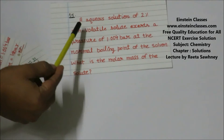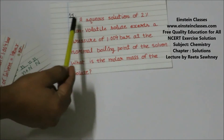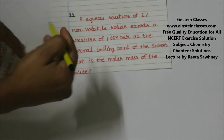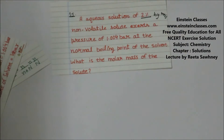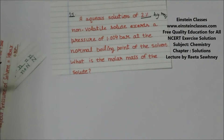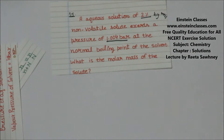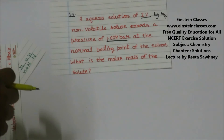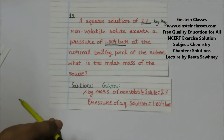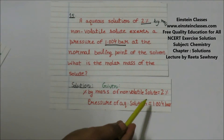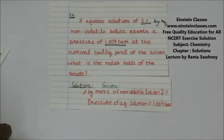We are going to discuss the NCERT back exercise problem 15 of the Solutions chapter. We have given an aqueous solution of 2% by mass of a non-volatile solute which exerts a pressure of 1.004 bar at the normal boiling point of the solvent. The percentage by mass of the non-volatile solute is 2% and the vapor pressure of the aqueous solution at the boiling point is 1.004 bar.